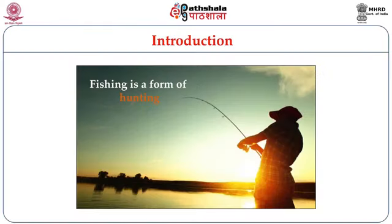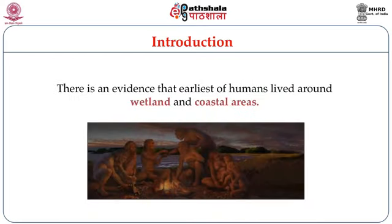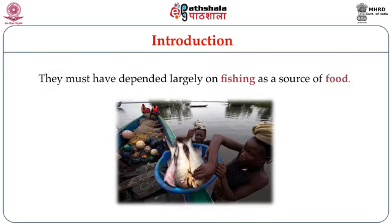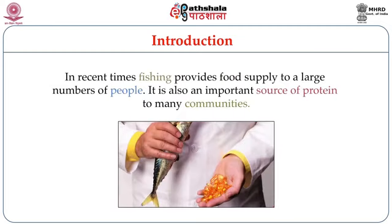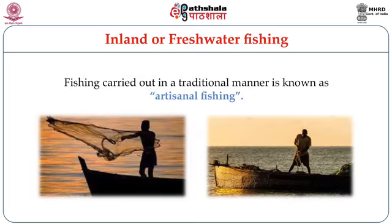Fishing is a form of hunting. There is evidence that the earliest humans lived around wetlands and coastal areas and must have depended largely on fishing as a source of food. In recent times, fishing provides food supply to a large number of people and is an important source of protein. Traditional methods of fishing differ widely from commercial modern methods. Traditional fisheries involving fishing households are known as artisanal fisheries, also called small-scale fisheries.